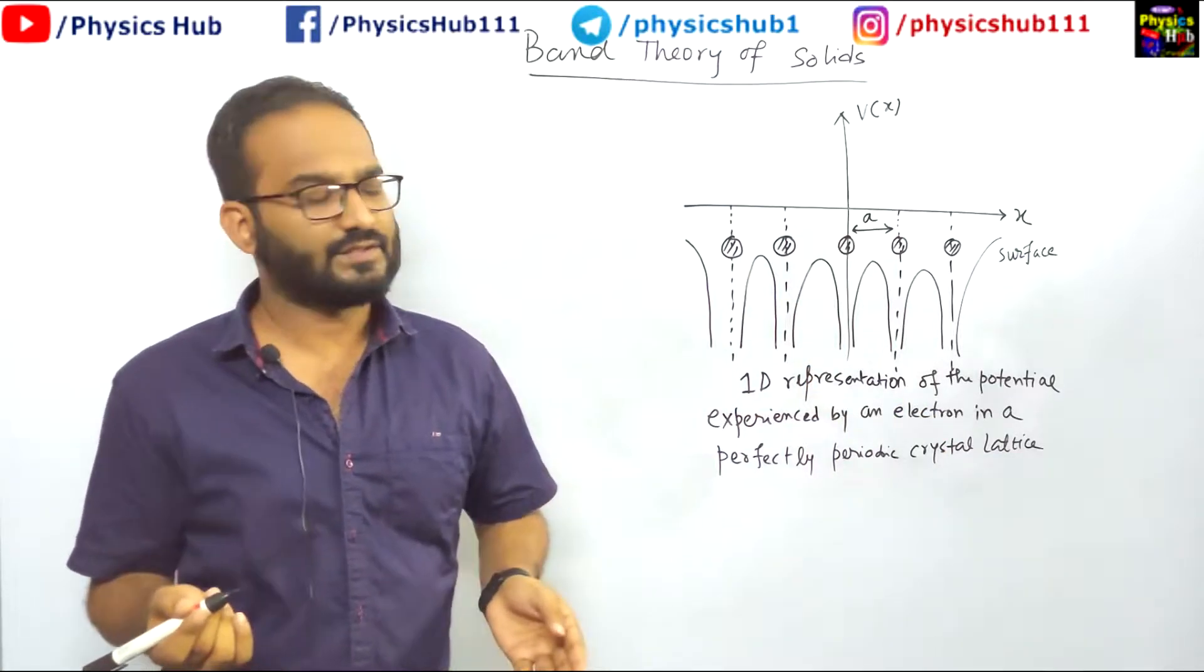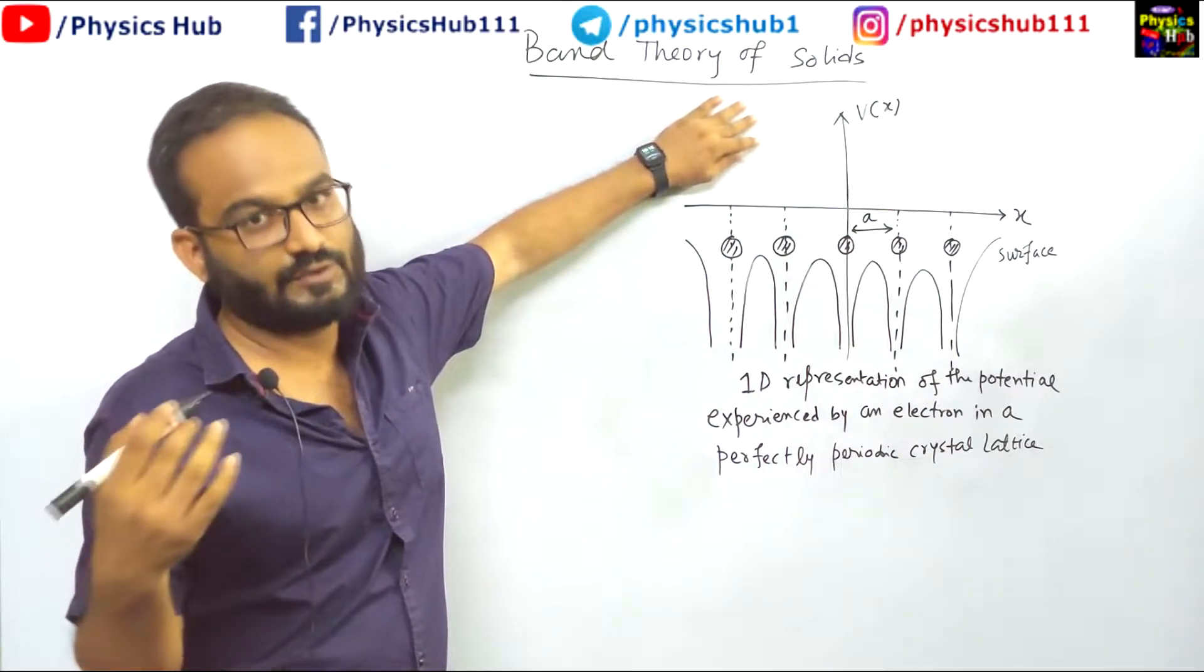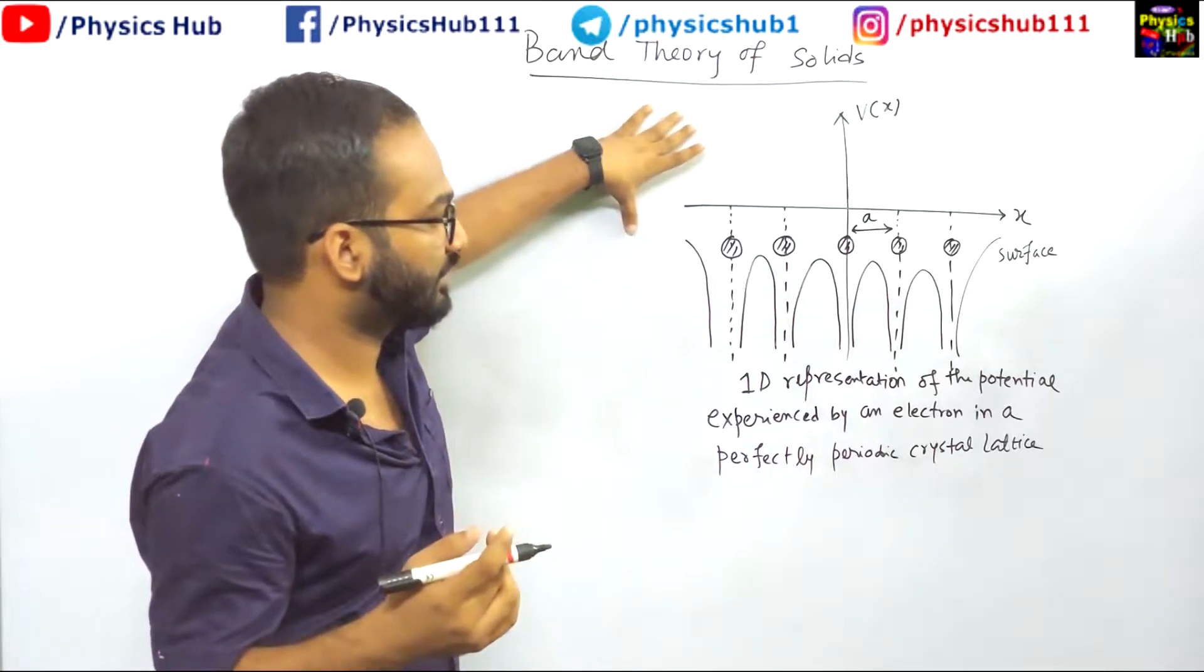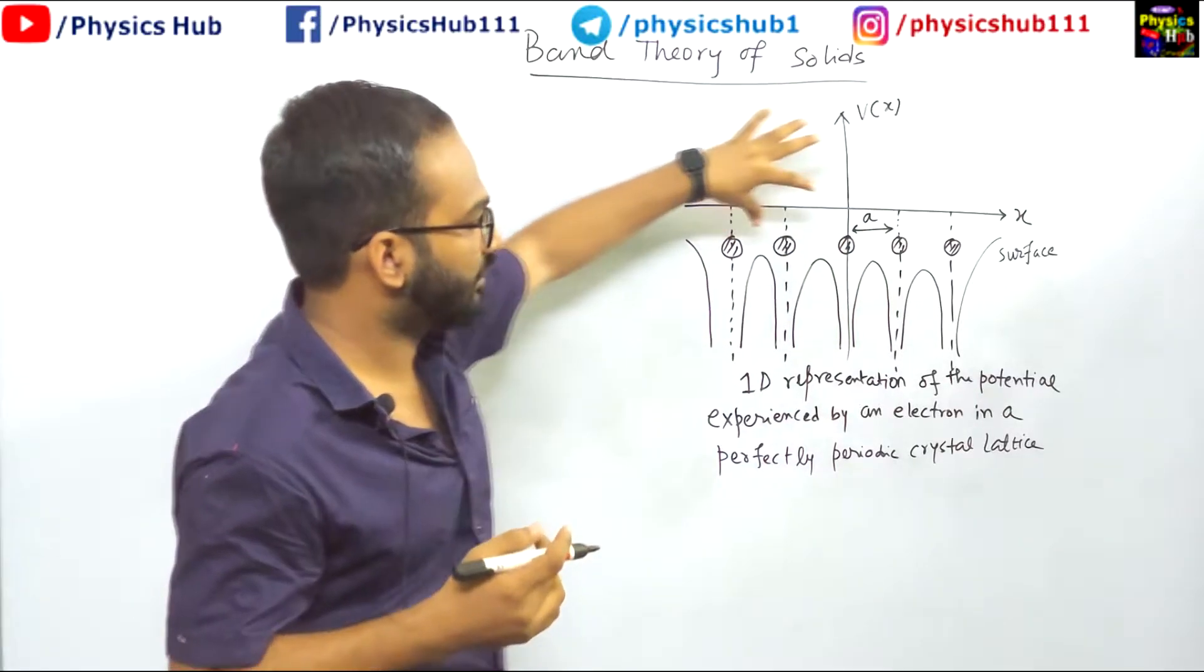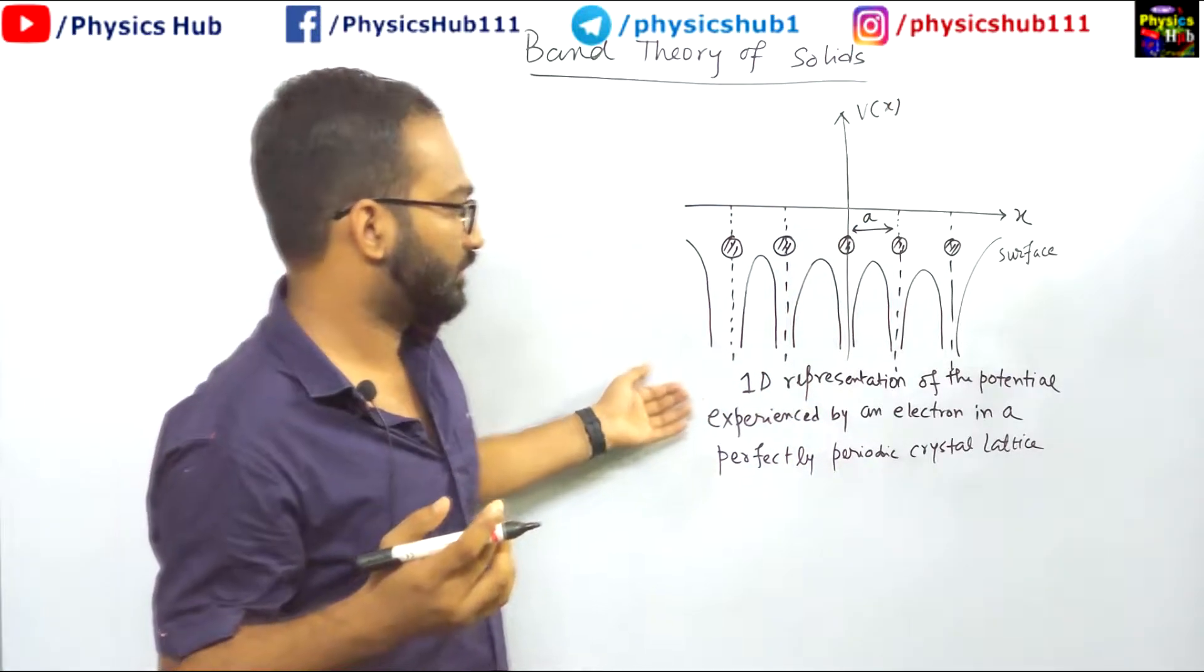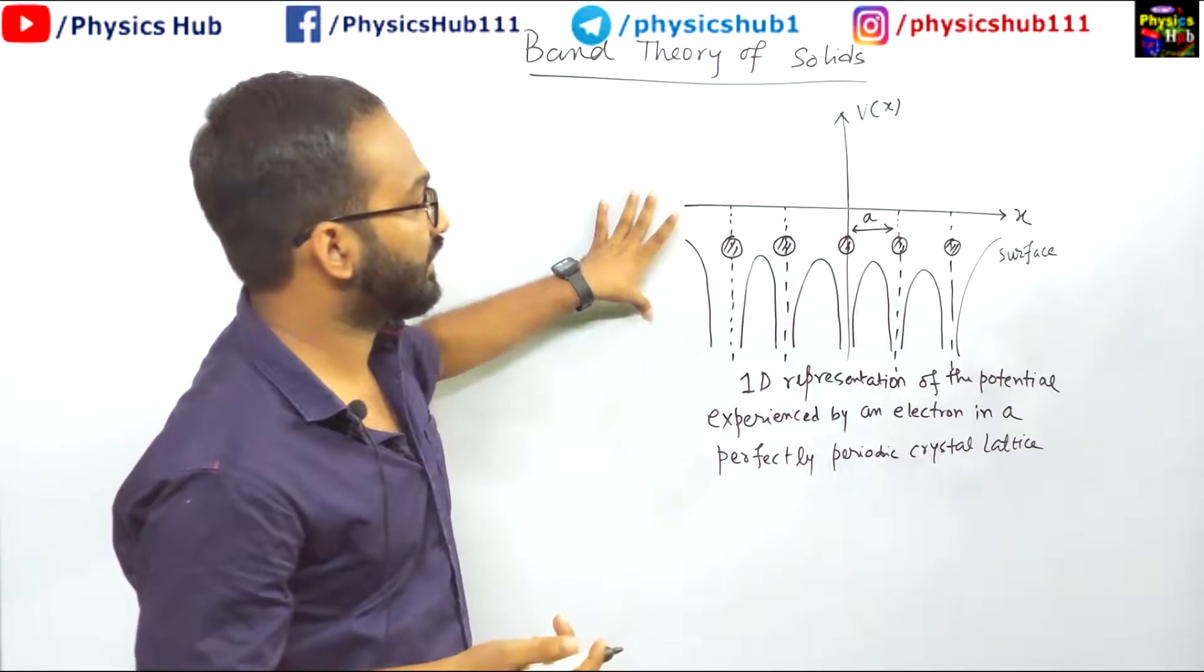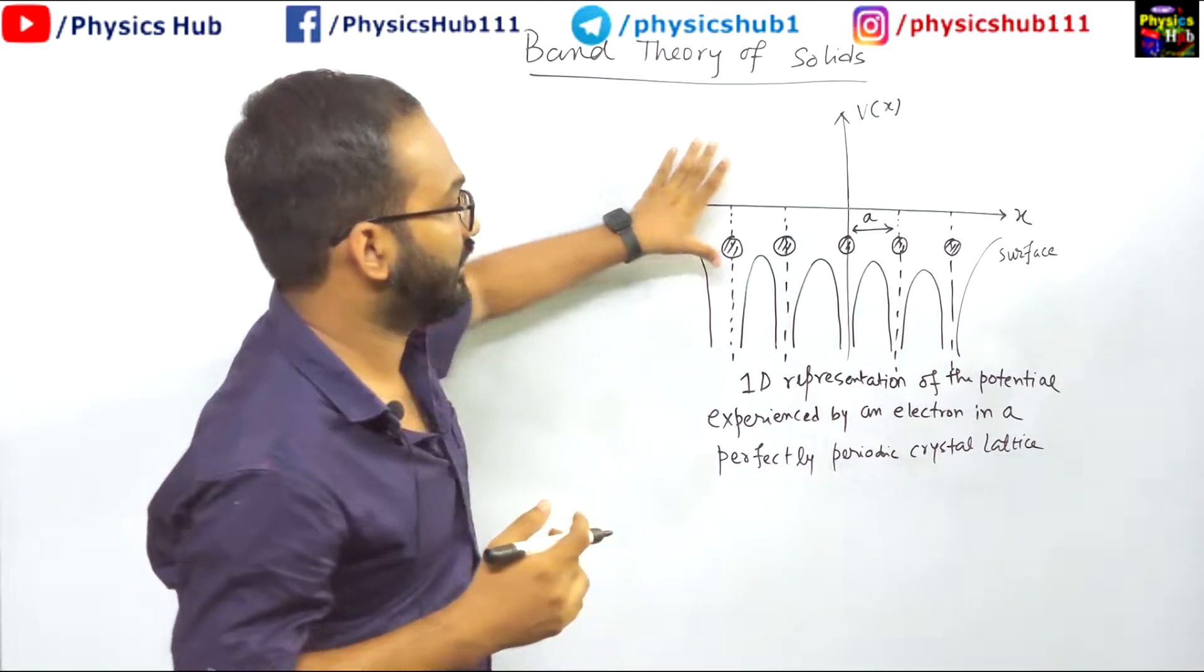Now the actual scenario inside a crystal is different. Here the actual form of the potential is really very complicated, but scientists tried to explain it by taking a periodic potential with a period equal to the lattice constant A. So this is an approximation of one dimensional array of atoms. And you can see the potential created because of that one dimensional array of atoms is shown like this.